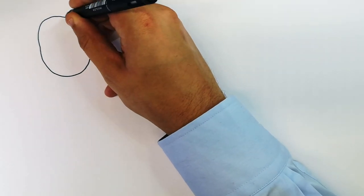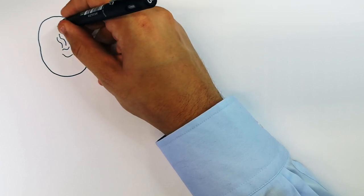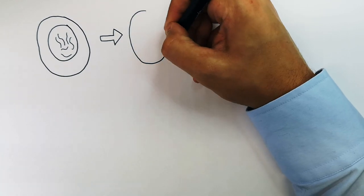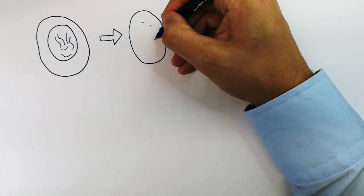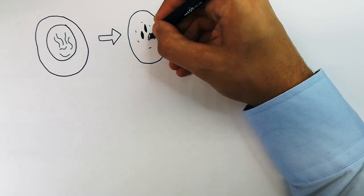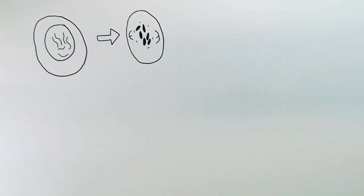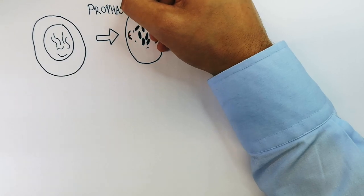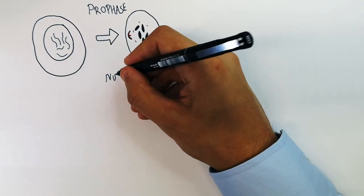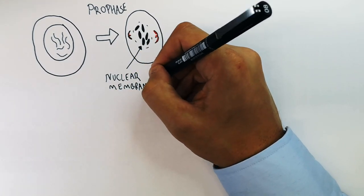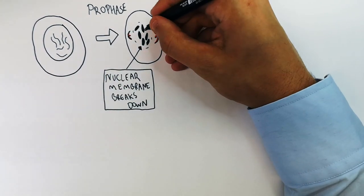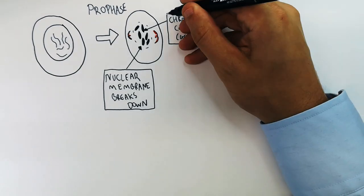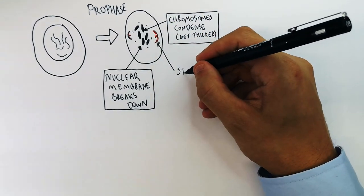The first stage of mitosis is prophase. I'm drawing the nucleus here with the chromosomes in it to show you what happens during prophase. First, the nuclear membrane disappears. The chromosomes condense — or get thicker. And the spindle fibers form. Those are the three things that happen during prophase: the nuclear membrane disappears or breaks down, the chromosomes condense, and the spindle fibers form.